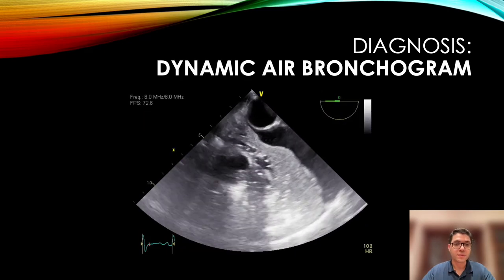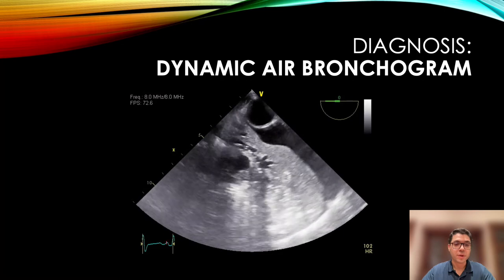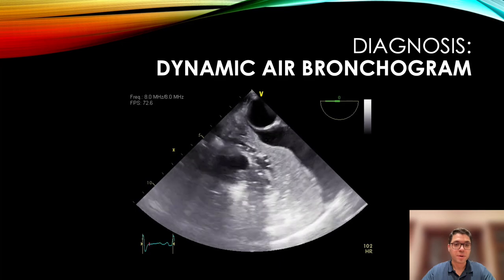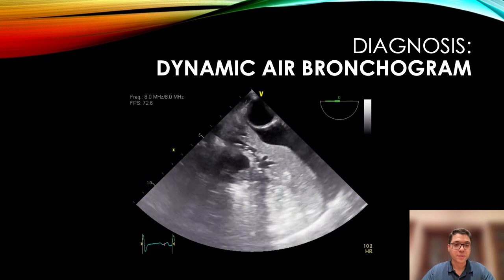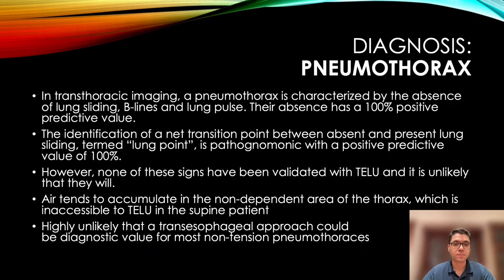But what is even more pathognomonic of pneumonia is dynamic air bronchograms, where you can see the bubbles moving around in the bronchi with the respiratory cycle. In transthoracic imaging, a pneumothorax is characterized by the absence of lung sliding, B-lines, and lung pulse.